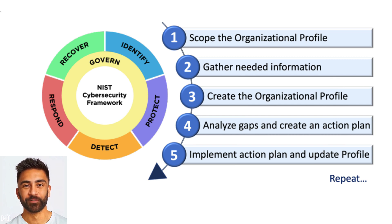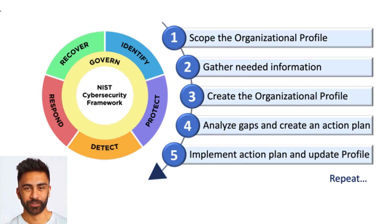The Protect function involves implementing safeguards to ensure the delivery of critical infrastructure services. It includes access control, awareness and training, data security, information protection processes and procedures, maintenance, and protective technology. The Detect function focuses on developing and implementing activities to identify the occurrence of a cybersecurity event. Key activities include continuous monitoring, detection processes, and security event analysis.